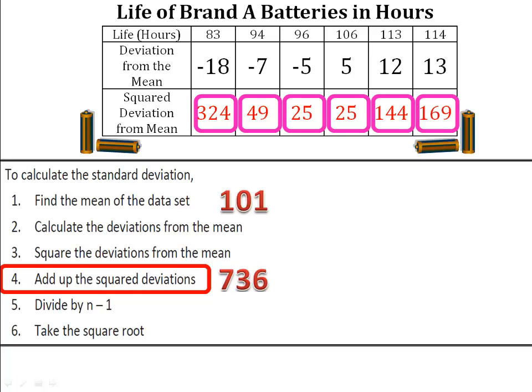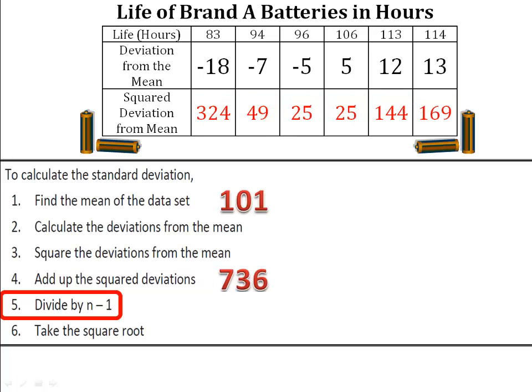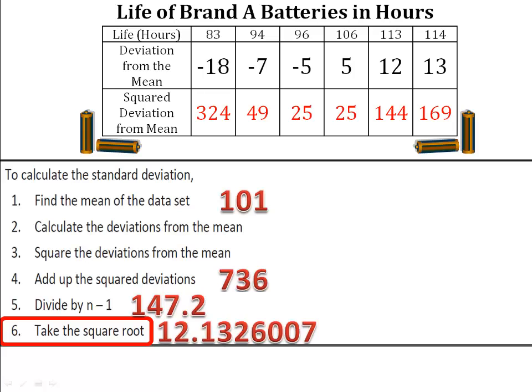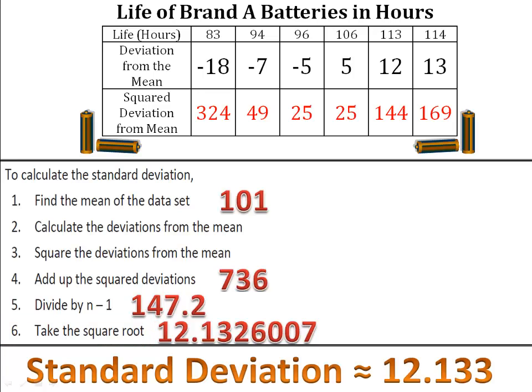Now, we count how many batteries there were. In this case, there were 6 batteries. We divide by 1 less, so we divide by 5. 736 divided by 5 is 147.2. Finally, we take the square root of that number and we get 12.1326007. That's the standard deviation. The standard deviation of this data set is 12.133.